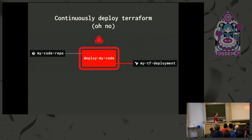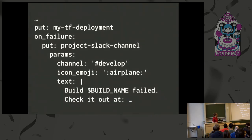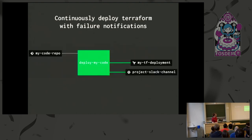A common pattern when organizations adopt continuous deployment is people stop looking at pipelines because they expect that merging to Git means it will work — and sometimes it doesn't. So let's add a Slack notification when the build fails. The Slack channel is a resource we can update, and when the put step — the Terraform deployment — fails, we send a message to the develop channel saying the build has failed, with contextual environment variables so you get a contextual notification.